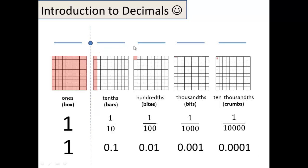A couple things to note: every time you move to the right, you're getting one tenth as big. And every time you move to the left, you're getting ten times bigger. So it takes 10 bytes to make a bar, and it takes 10 bars to make a box. And if you think about it, if I ask you how many bytes it takes to make a box, it would be 10 times 10, which would be 100. The most important thing is to know that these continue to get smaller — these are all parts of one whole, and as you move to the right, you're getting one tenth as big.